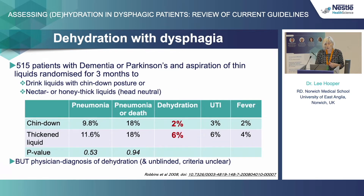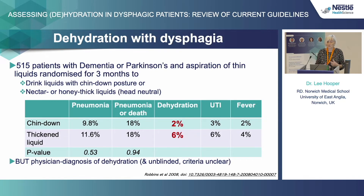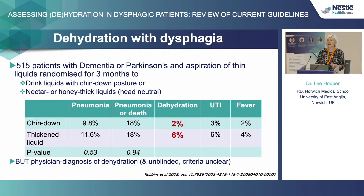This is a study I'm sure you're aware of — Robbins 2008. They randomized 515 patients with dementia or Parkinson's and aspiration to either drinking liquids with a chin-down posture or thickened liquids. They found very similar levels of pneumonia or pneumonia and death in those two groups. But what you do see as a difference is dehydration levels — dehydration levels seem to be a little bit higher in the thickened liquid group than the chin-down group. That's supported by the UTI data. It's not good data because dehydration was diagnosed by individual physicians, it wasn't blinded, and individual physician diagnosis is a little bit random. So it's not brilliant data, but it does suggest there may be some increased risk with thickened fluids.